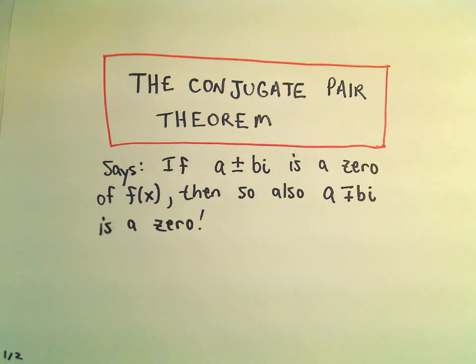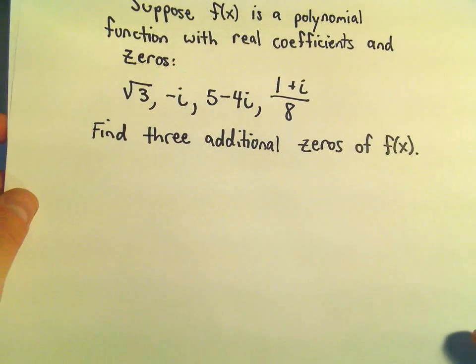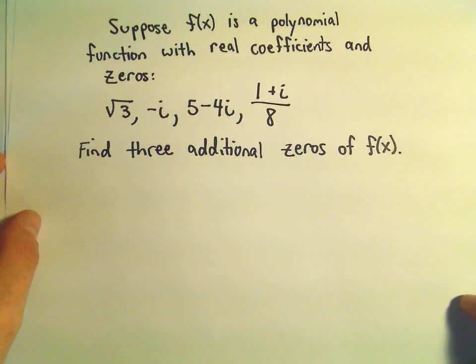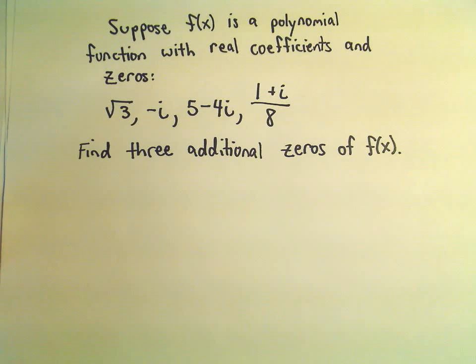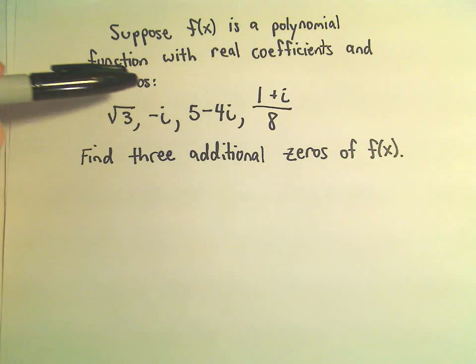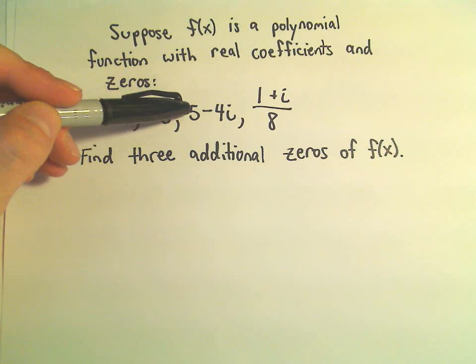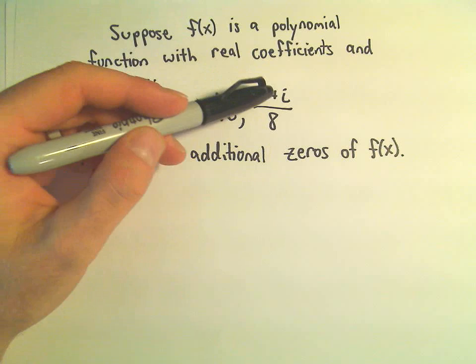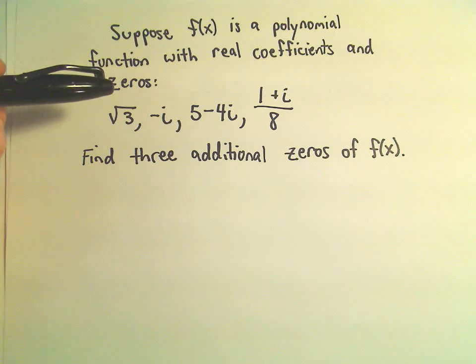So suppose we know that f(x) is a polynomial with real coefficients, and it has the following zeros: square root of 3, negative i, 5 minus 4i, and 1 plus i divided by 8. Suppose those are all zeros,